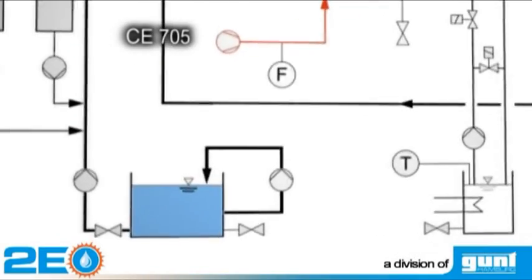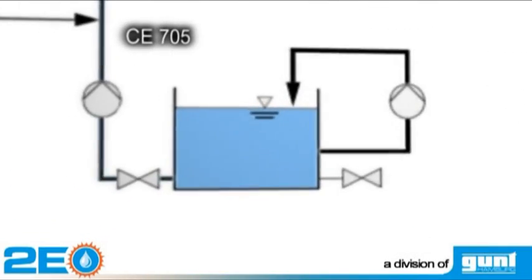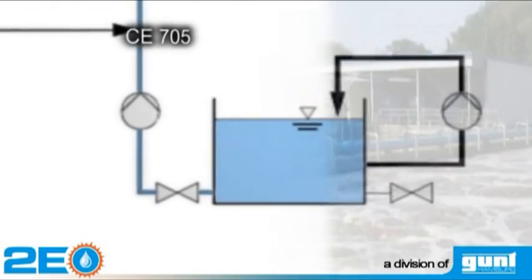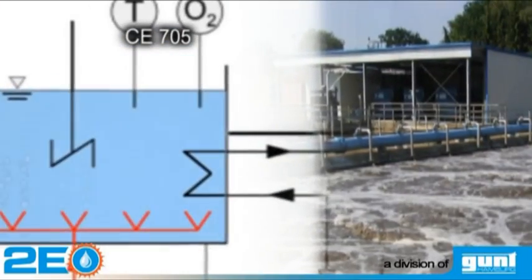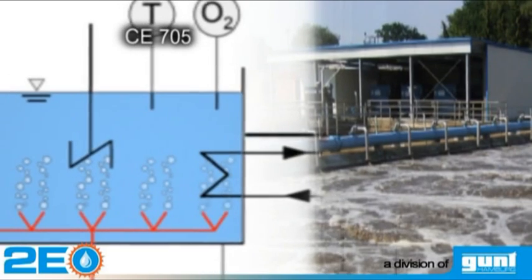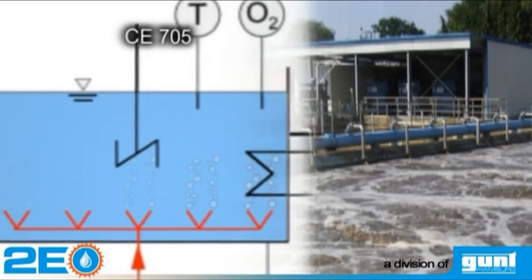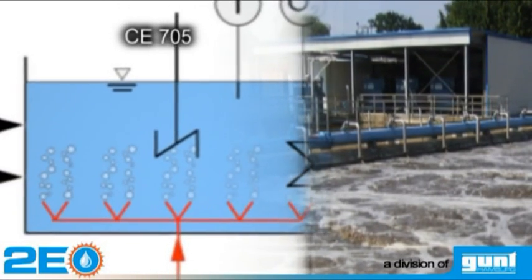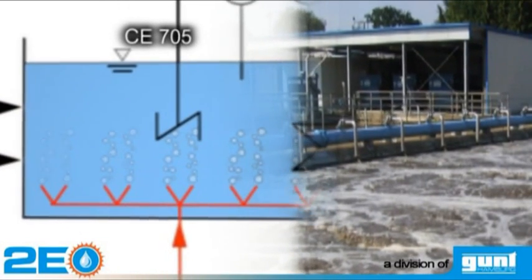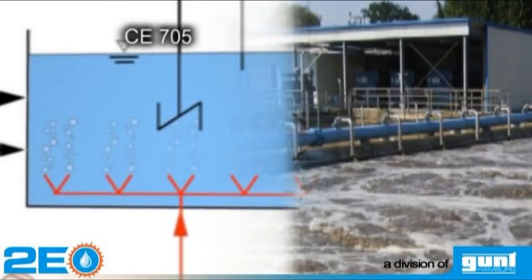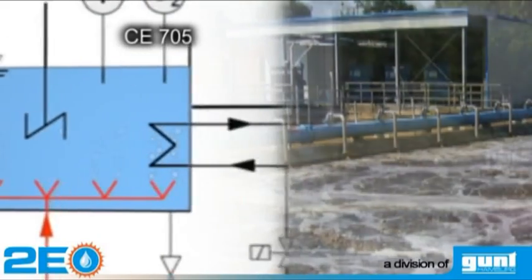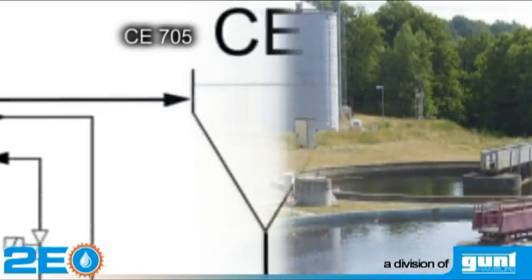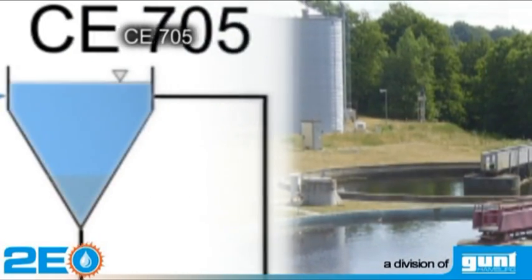The CE705 demonstrates the most frequently used biological wastewater treatment process, the activated sludge process. Due to the relevance of this process, we've attached great importance to a very practical and professional design.